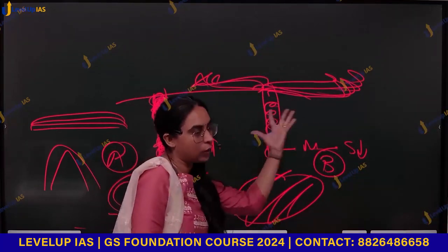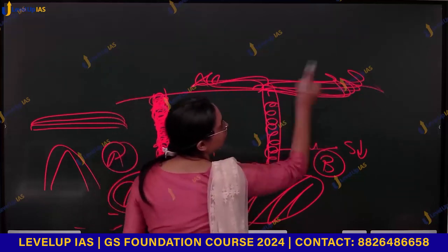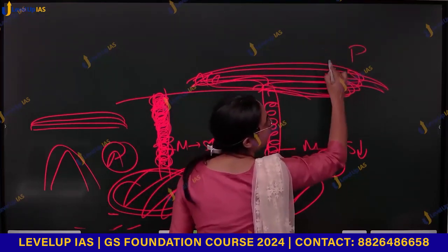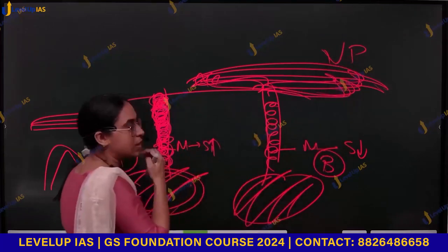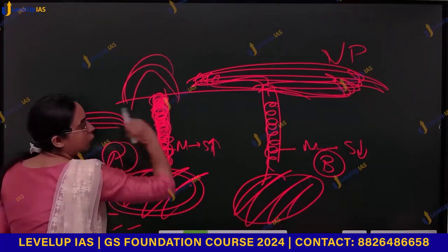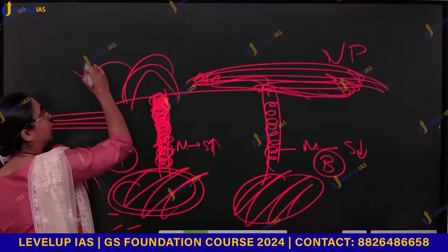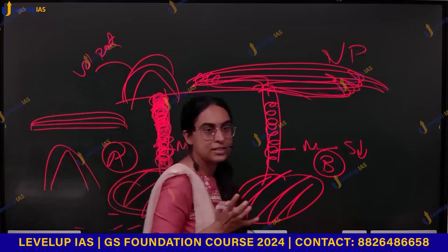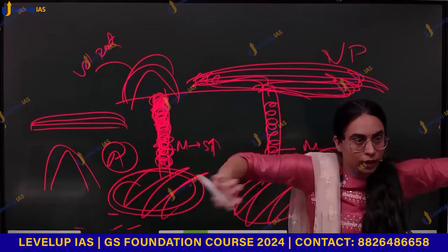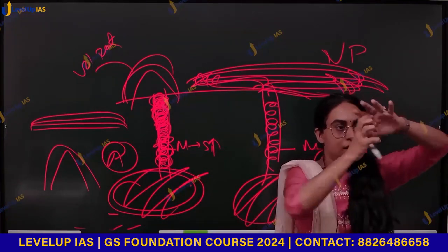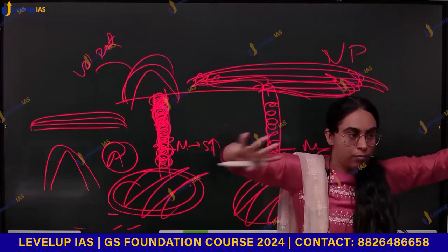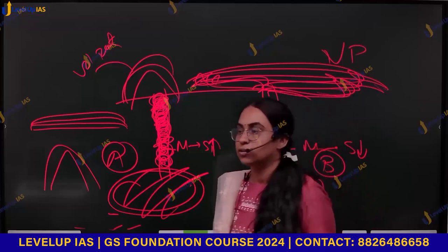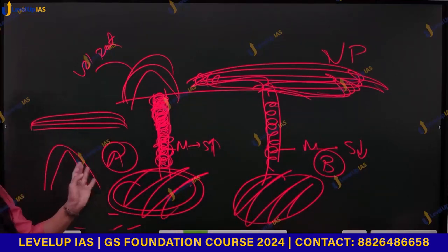Something that is more flowing — the magma will flow and form volcanic plateaus. Something that is more sticky cannot flow easily and will just accumulate, forming volcanic peaks. Something that is flowing will form bigger, larger landforms like plateaus.